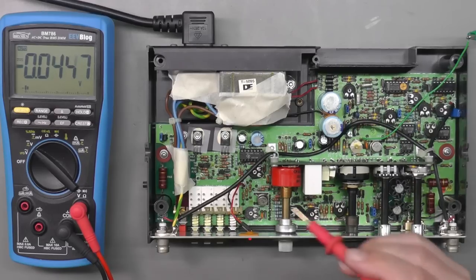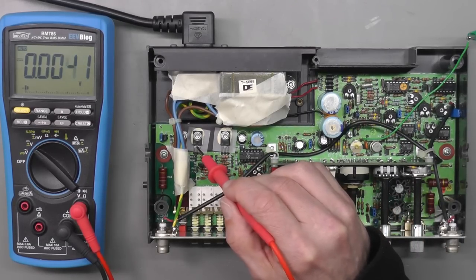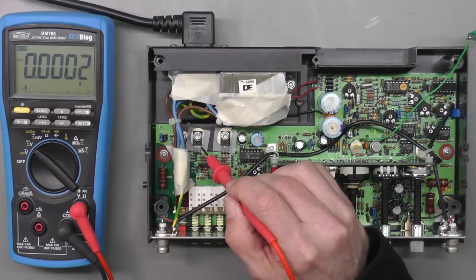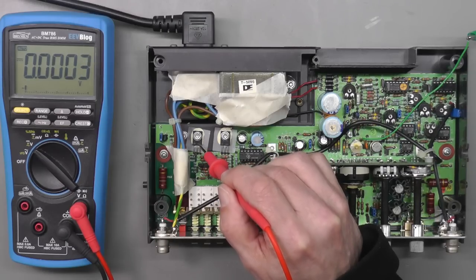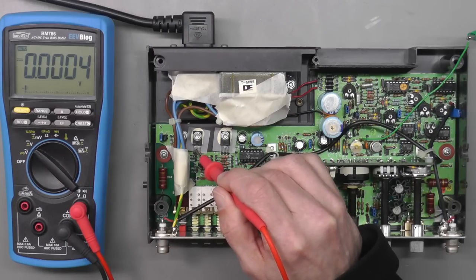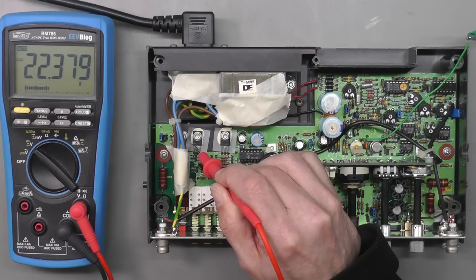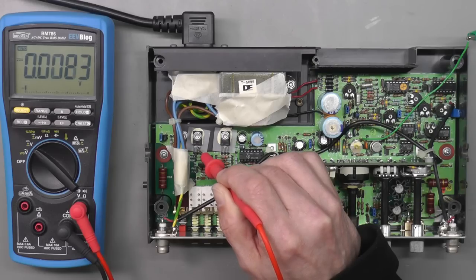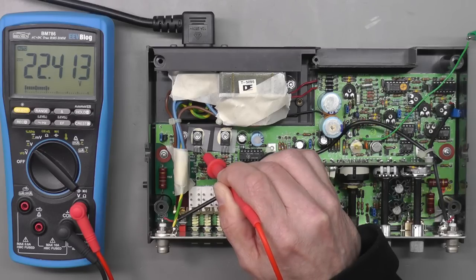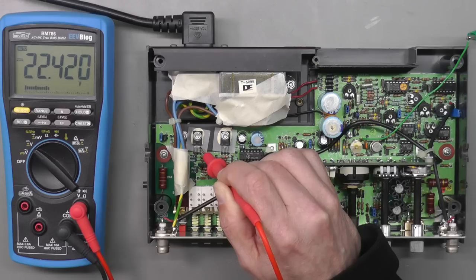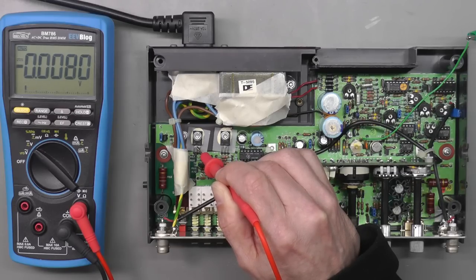We're assuming the op amp's right at this moment, so let's measure the emitter, base, and collector. This is TR13, the PNP transistor that drives the plus 14 volt rail. Let's look at the emitter—22 volts, well that's direct from the unregulated supply, so that's okay. The collector is at zero volts, that's why we're not getting any plus 14 volt rail. And the base is at the same potential as the emitter, so no wonder we've got nothing on the collector.